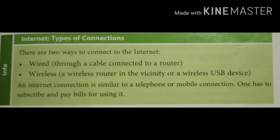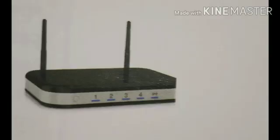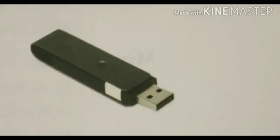Let's look at the types of internet connections. There are two ways to connect to the internet. The first is wired, where the internet connection is provided through a cable connected to a router. The second is wireless, where a USB device with a SIM card provides the internet connection. An internet connection is similar to a telephone or mobile connection — one has to subscribe and pay bills for using it. The image shows a router as an example of a wired connection, and a USB device as an example of a wireless connection.